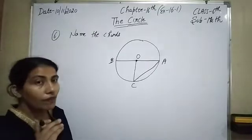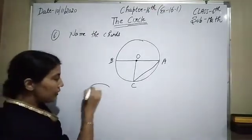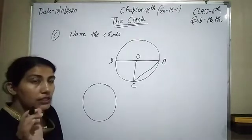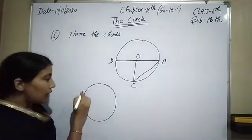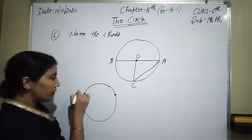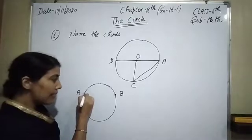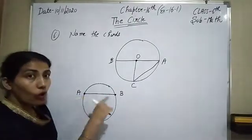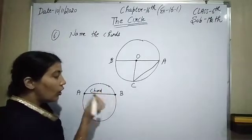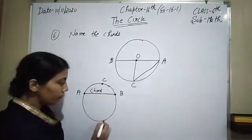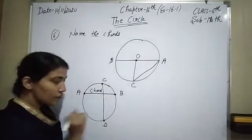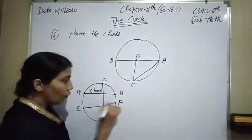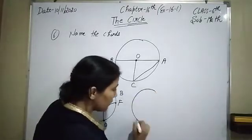We have to find out the name of the chords. So firstly I will explain what chords are. A chord is a line segment connecting two points on the circumference of a circle. Here is a circle with two points on the circumference — a line segment connecting them is called the chord. For example, points C and D form a chord, or points E and F also form a chord.